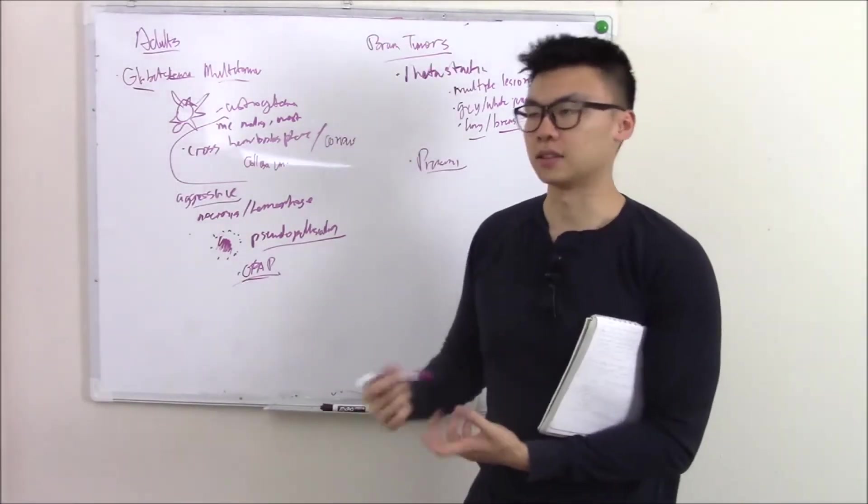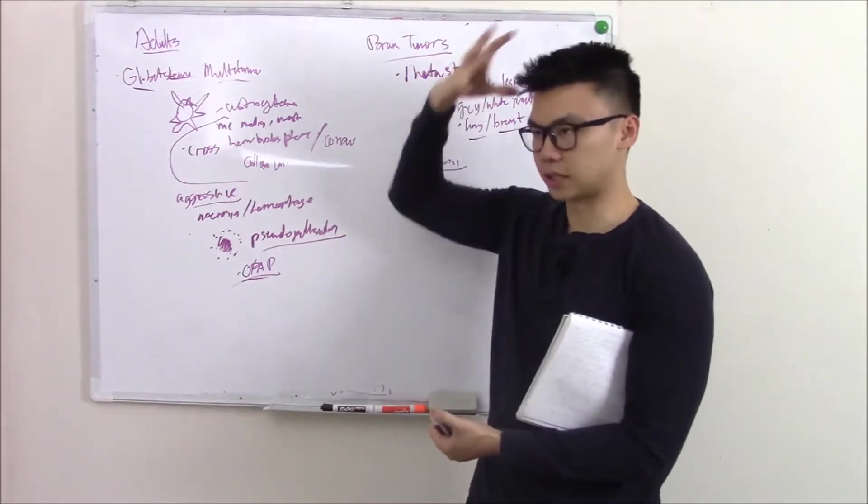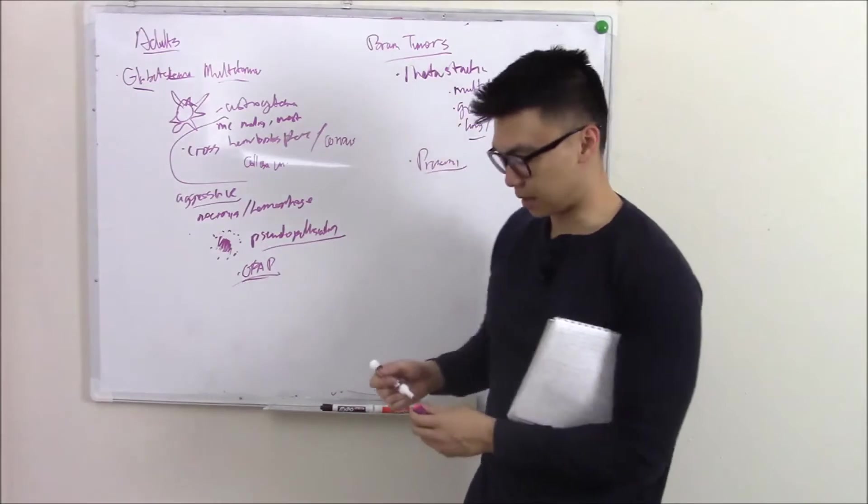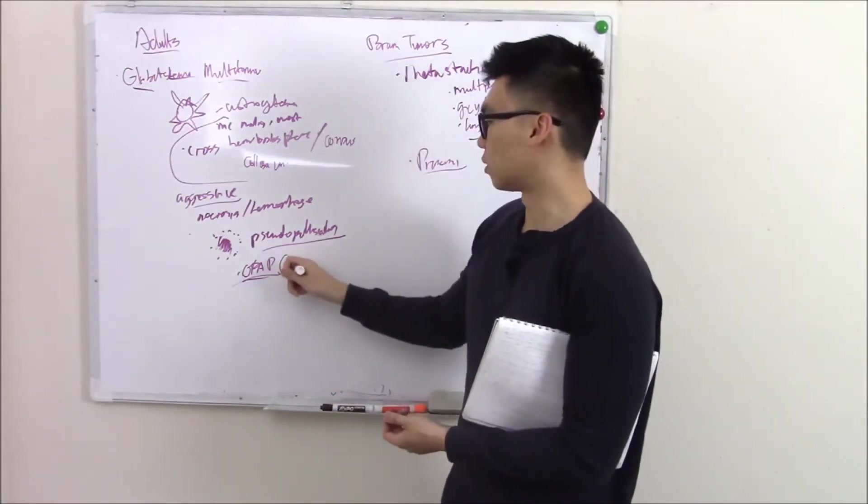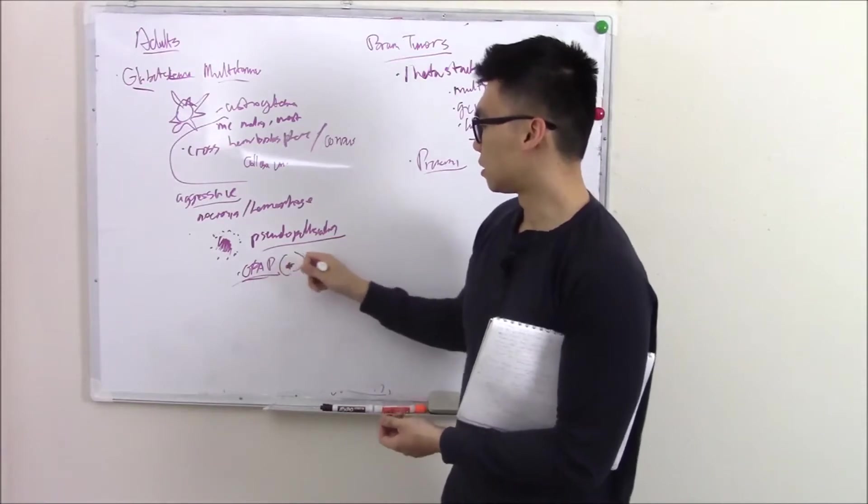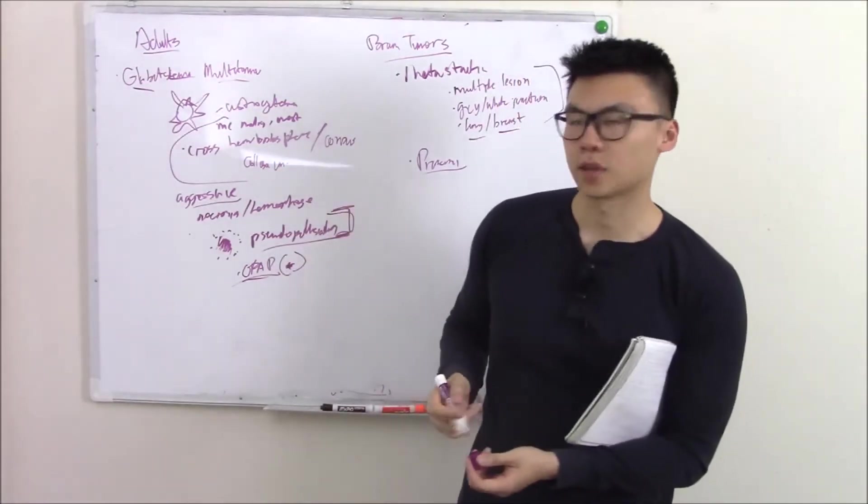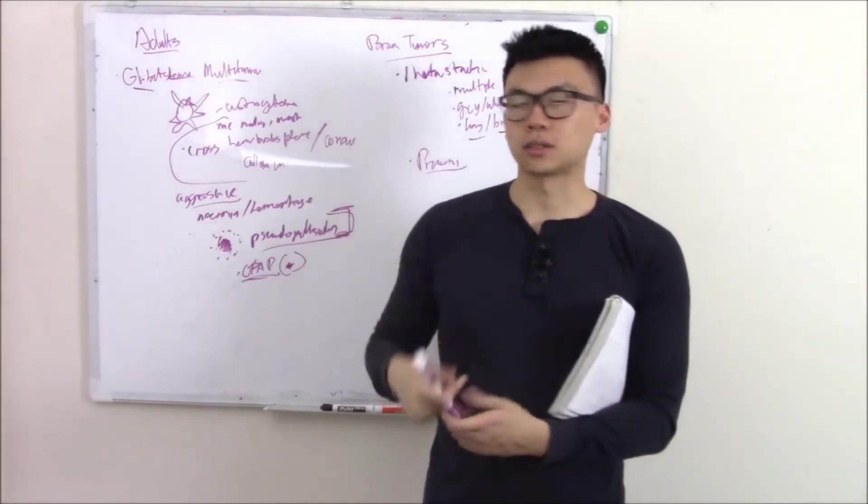So talk about an adult patient having seizures, having signs of raised ICP. You do a scan, you see this mass. It's crossing the midline, necrotic, hemorrhagic, and then they might ask, and then they might say the cells are what? They're GFAP positive or they show pseudopalisading characteristics. All right. That's glioblastoma multiforme or adult astrocytoma.